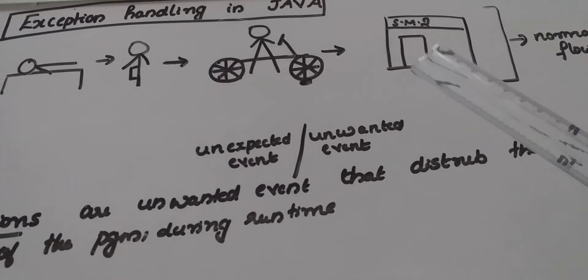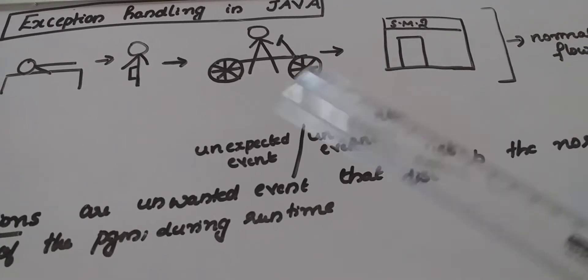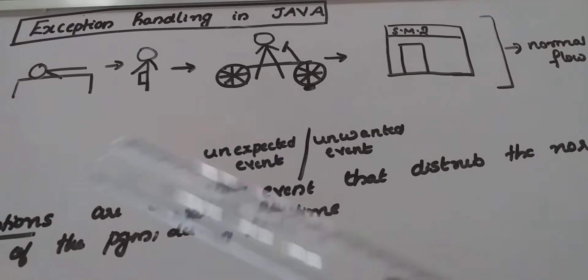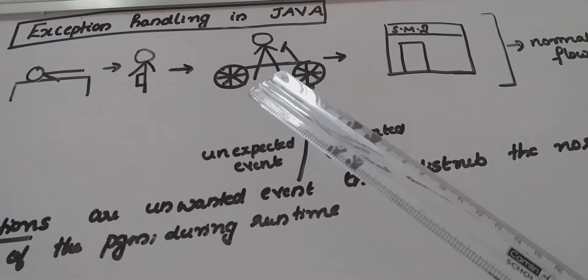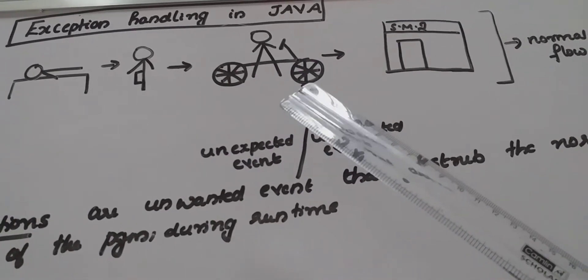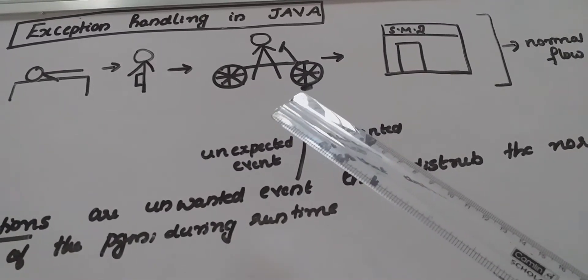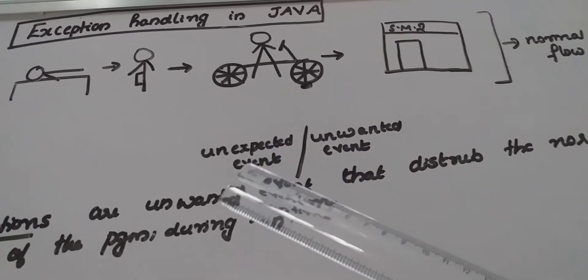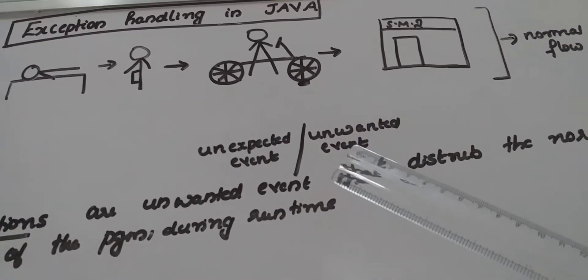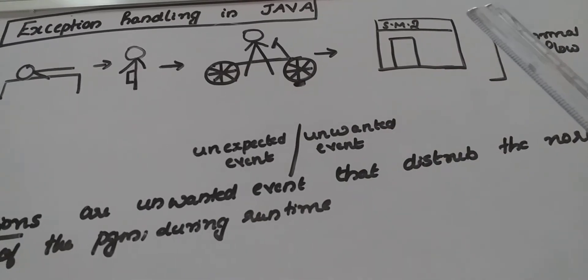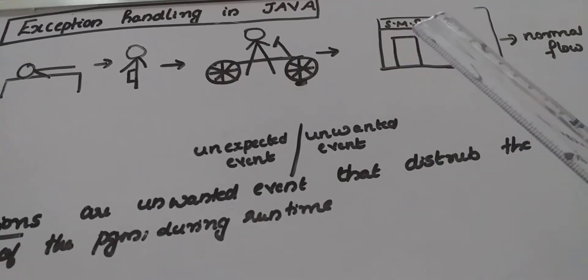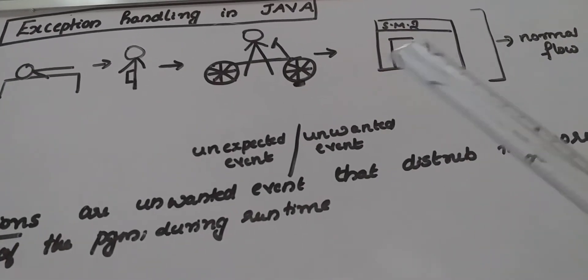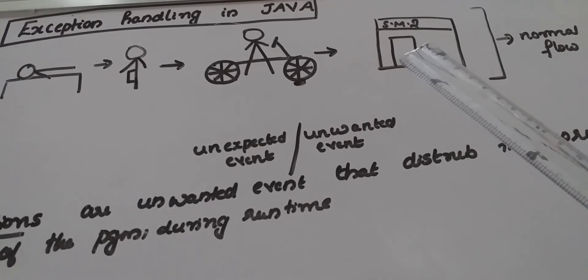Suppose an unwanted event occurs during his daily routine. One day he wakes up, dresses up and takes his bike. Suddenly his bike gets punctured. An unexpected or unwanted event occurs in his normal life. What is the result? He can't reach his institute at the right time.